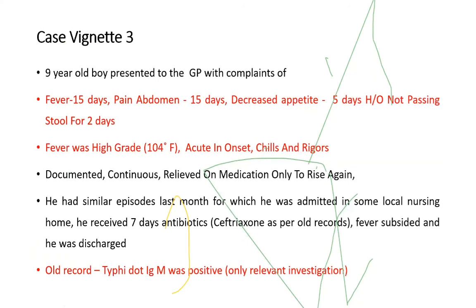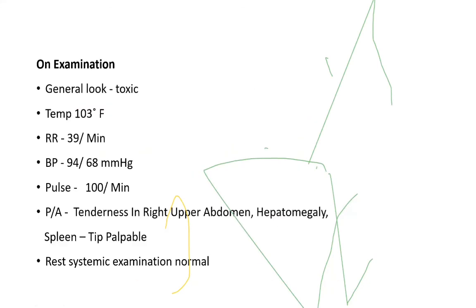Case 3: A 9-year-old boy presented with fever for 15 days, pain abdomen for 15 days, decreased appetite, and constipation. Fever was high-grade at 104°F, acute onset with chills and rigors documented. He had a similar episode last month for which he received 7 days of antibiotics at a local nursing home, fever subsided, and he was discharged. Old records showed Typhidot IgM was positive. On examination: toxic-looking, high-grade fever, tenderness in right upper abdomen, hepatomegaly, and palpable spleen tip.